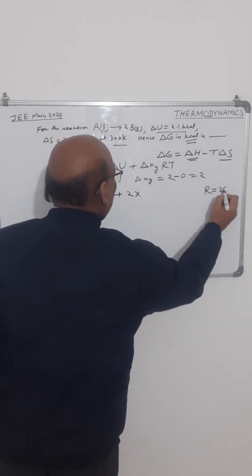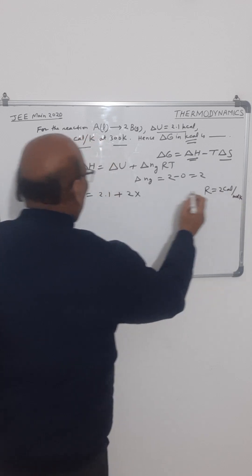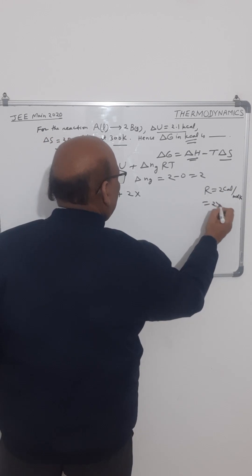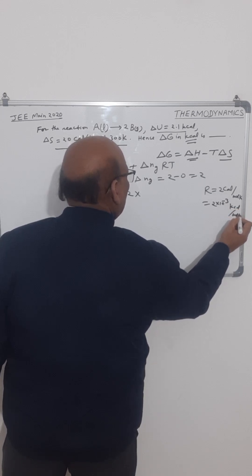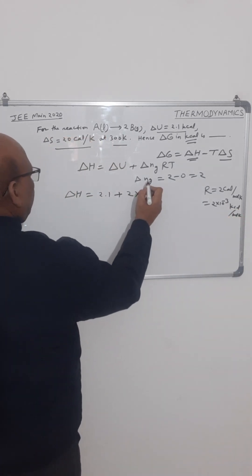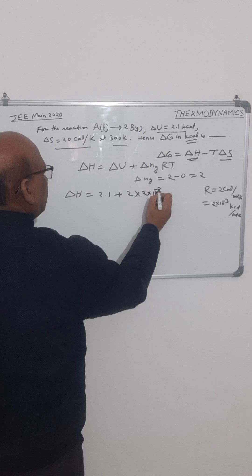In calories, R is 2 calorie per mole into kelvin. In kilocalorie, it will be 2 into 10 to the power minus 3 kilocalorie per mole kelvin. So we will write the value, 2 into 10 to the power minus 3, that is for R.